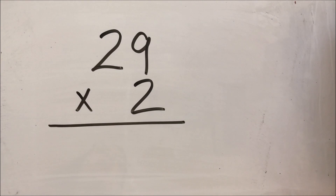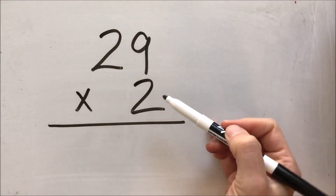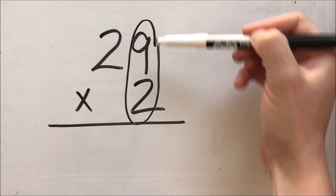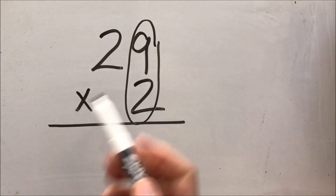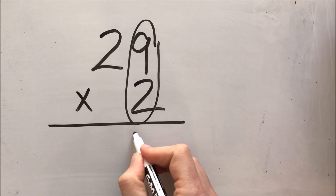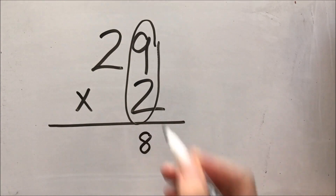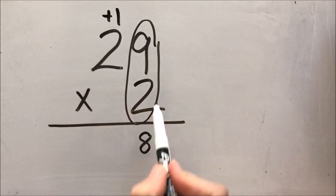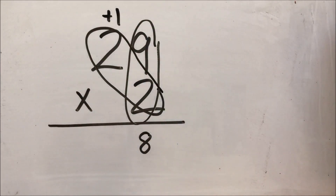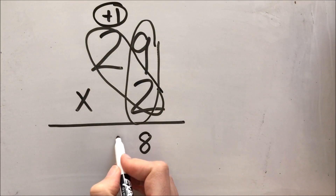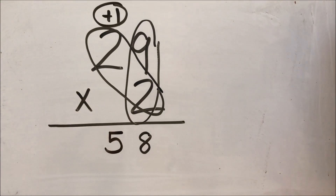The last strategy I want to show you is called the traditional strategy — and if parents are watching this video, this is probably the strategy you learned in school. The traditional method tells us to first multiply our ones place: 2 times 9 equals 18, and we can't write 18 down here because we can only have a single digit in the ones place. So I have 8 ones and I add on a ten, because 18 means 8 ones and 1 ten. Then I multiply 2 to my tens place: 2 times 2 is 4, but I can't forget to add on my ten, making it 5. So 29 times 2 has the product of 58.